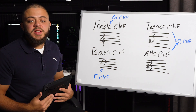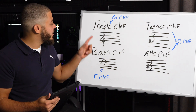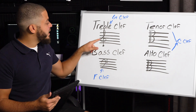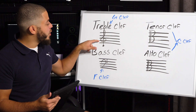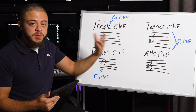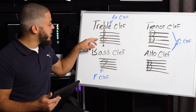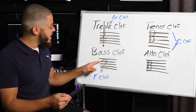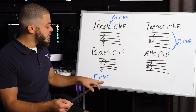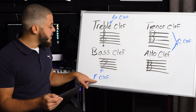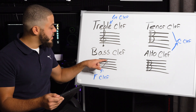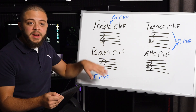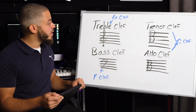The first clef we're going to talk about is the treble clef. The treble clef has this symbol on it, which is also known as the G clef because the little circle right here is right over the note G. The next one we're going to talk about is the bass clef, which has this symbol and it's also known as the F clef. The reason why it's called the F clef is because these two dots that line right in the middle is the note F.